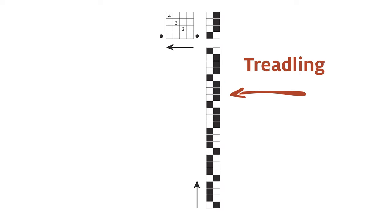The treadling at the bottom right indicates which treadles to press, or in our case, helps us determine which shafts we need to raise. If a project uses different weft colors or yarns, the treadling may also indicate how they are used. Read the treadling from bottom to top as the arrow indicates.